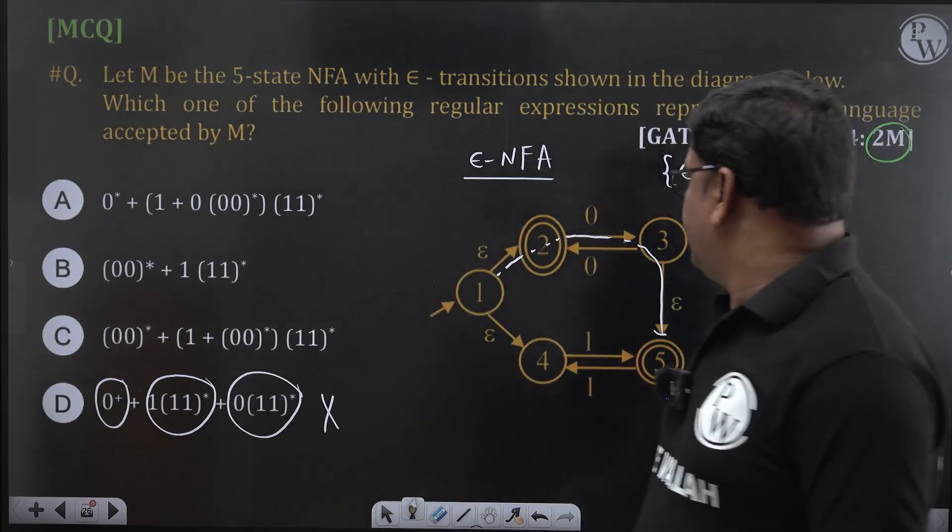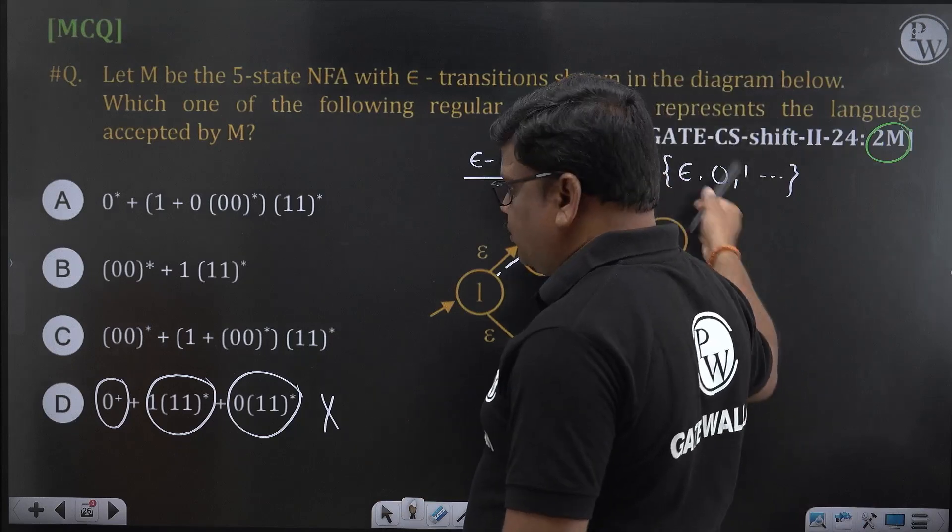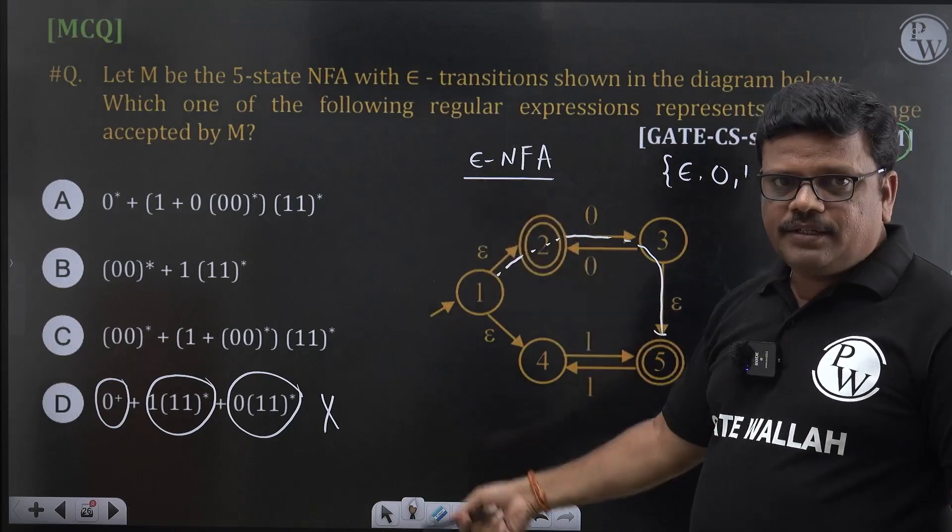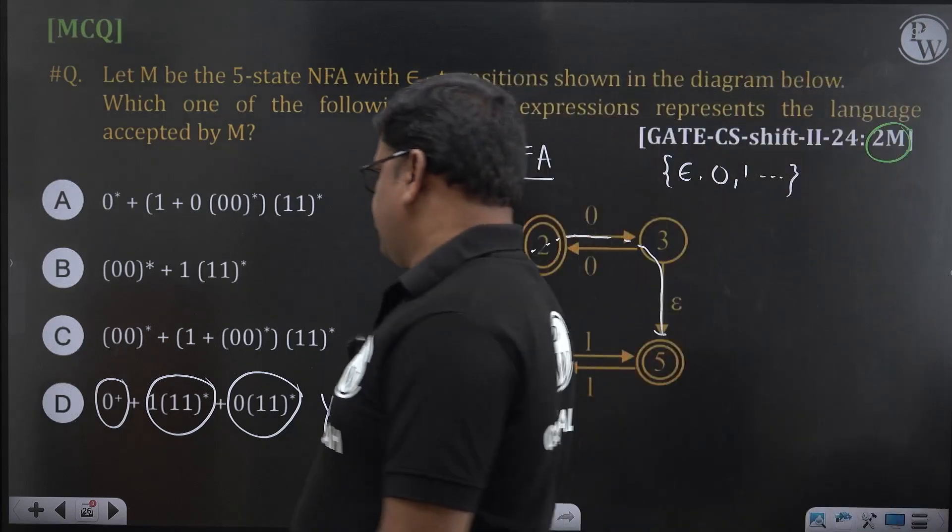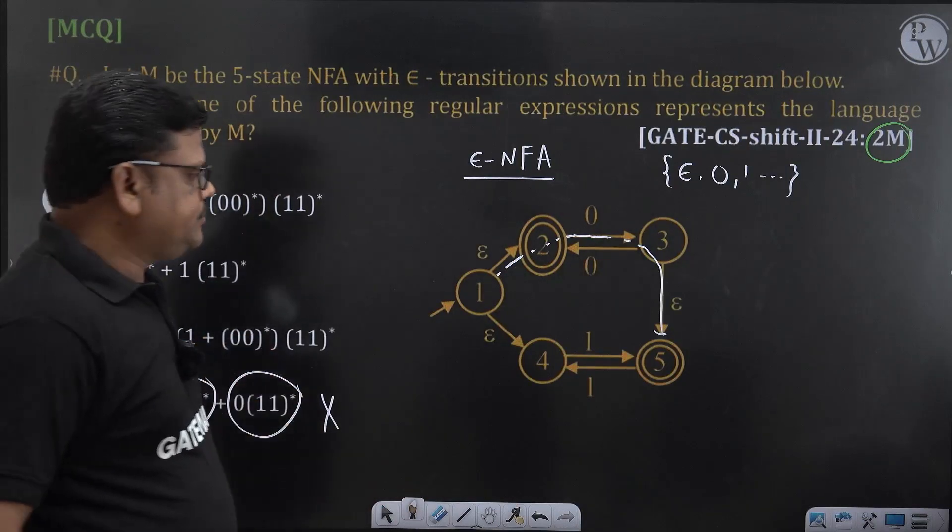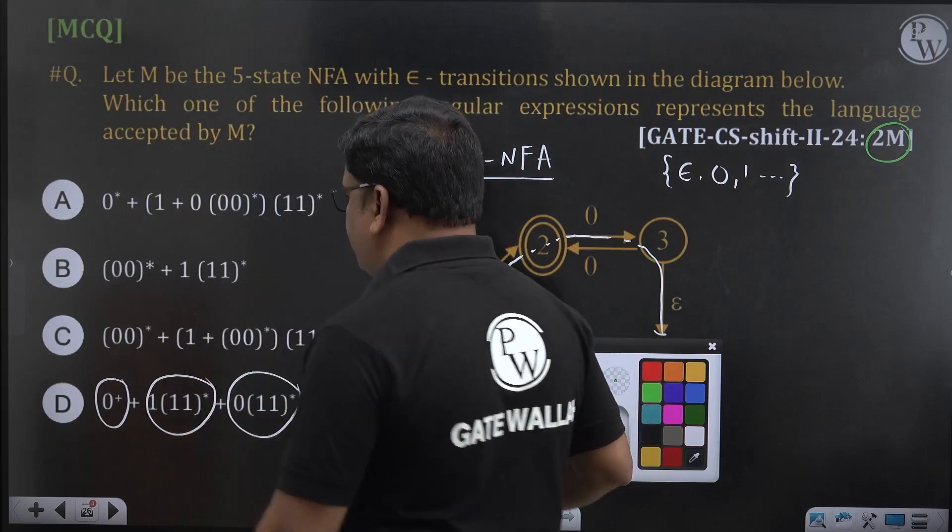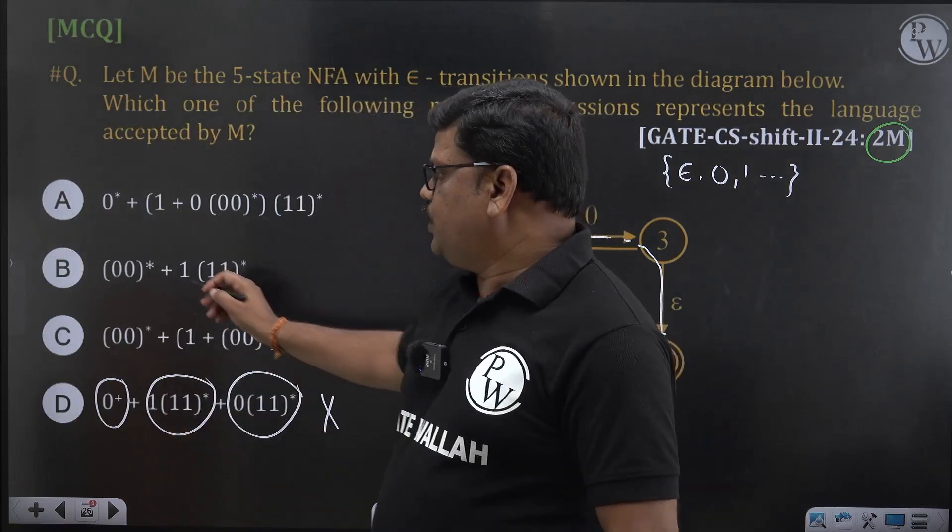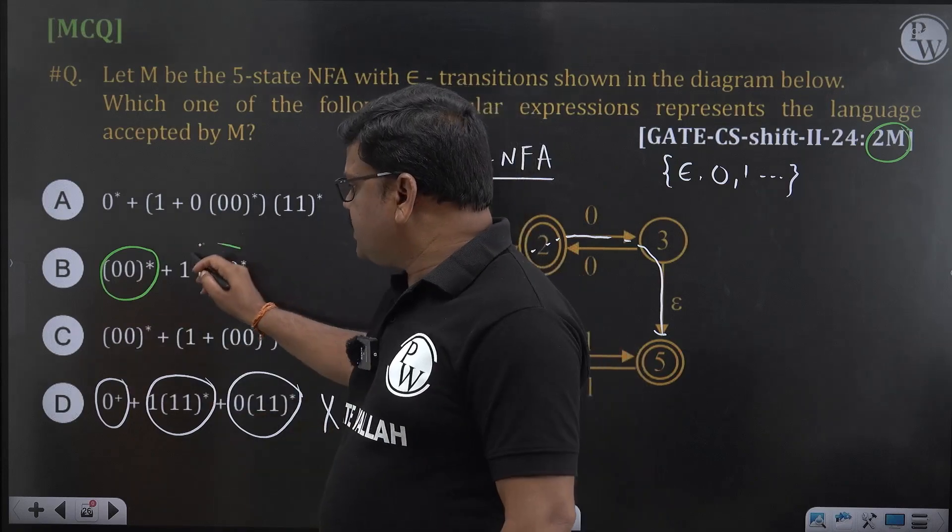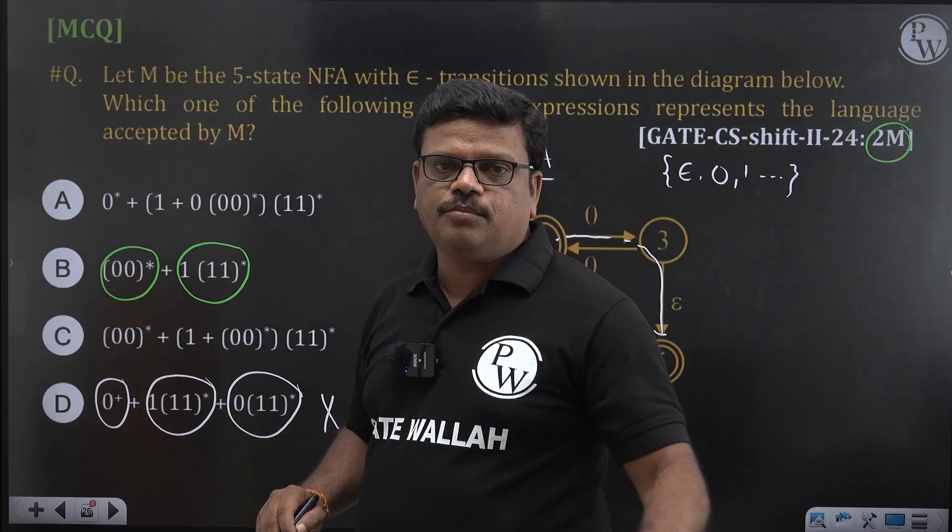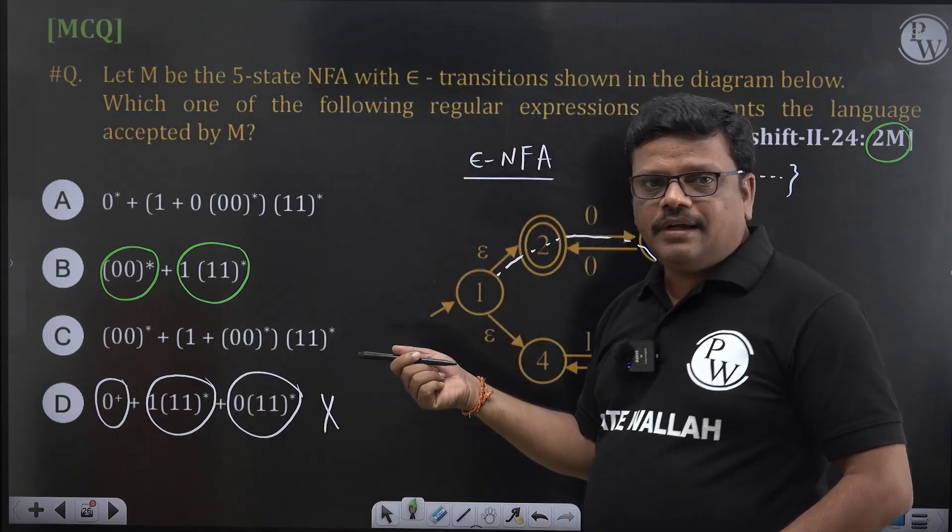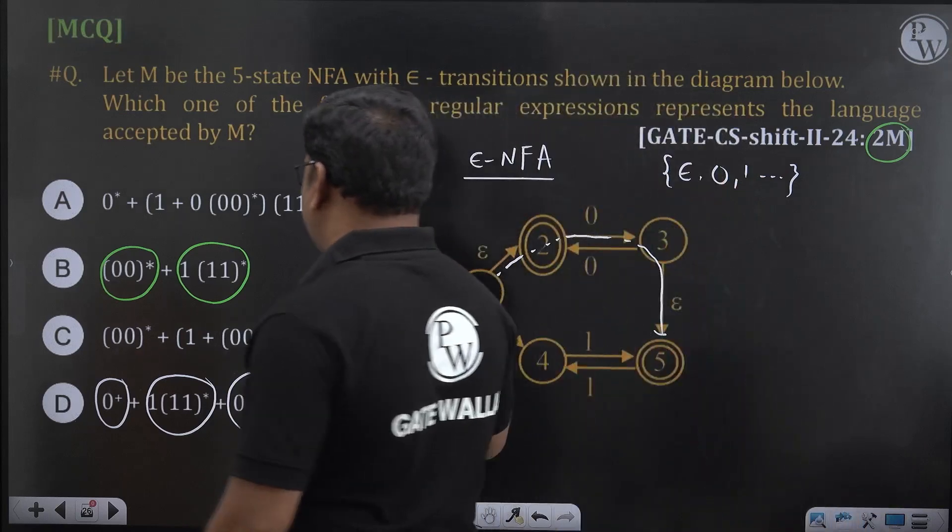Then, we are generating 0. This automaton will accept 0, from where 0 is generated observed. Come to the B option. From the B option, can we generate only single 0? Is it possible to generate only single 0 from option B? No. Either we can generate even number of 0s or we can generate odd number of 1s. Single 0, this is not possible to generate, but our automaton is accepting this. So, B is not the equivalent one for this, we can eliminate B as well.